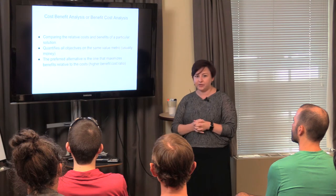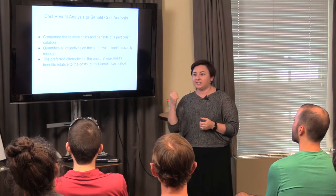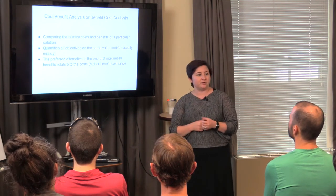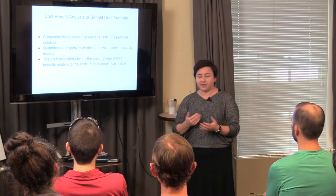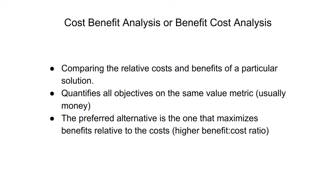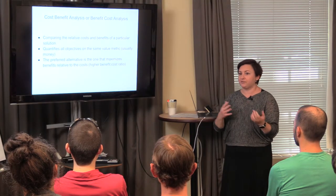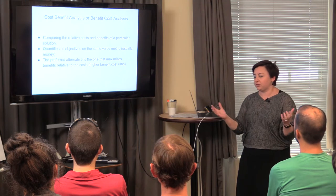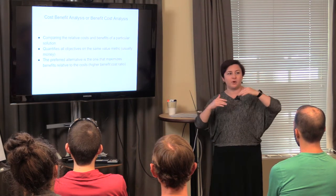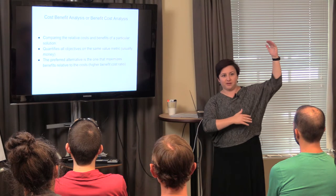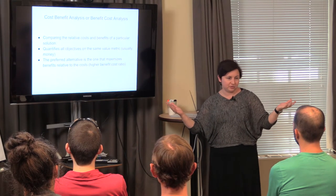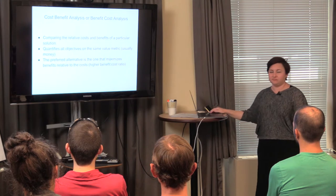It puts things into dollar values, which is why a lot of people like it. That does mean there are things that are difficult to put into dollar values that you have to monetize to use this method. The preferred alternative is the one that maximizes benefits relative to cost — often described as a higher benefit-to-cost ratio. The option with more benefits than costs is the one you choose. It's kind of straightforward and intuitive.